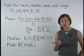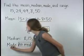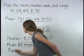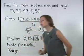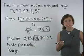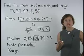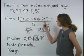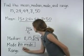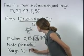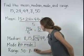Finally, let's find the range. The range is the difference between the greatest number in the data set and the least number in the data set, which in this case is 50 minus 8, or 42.